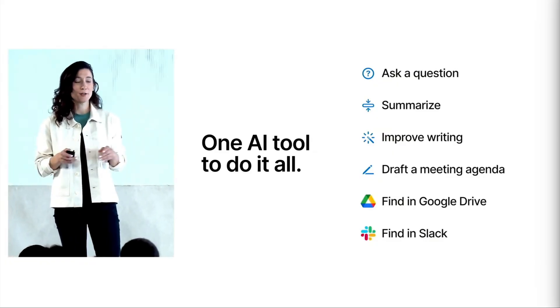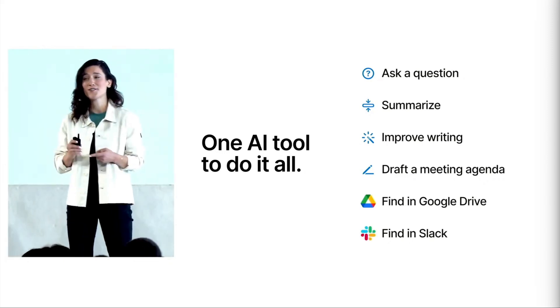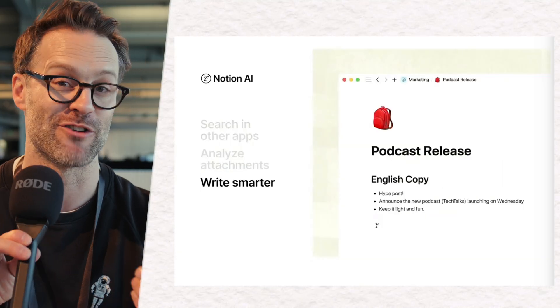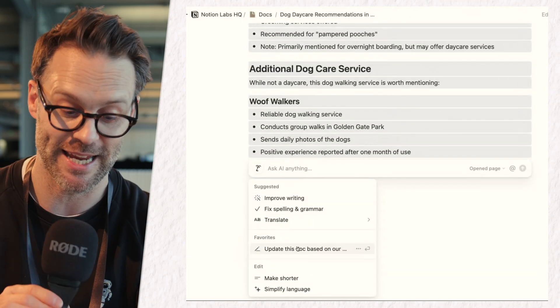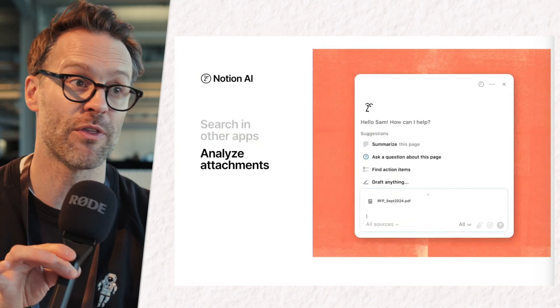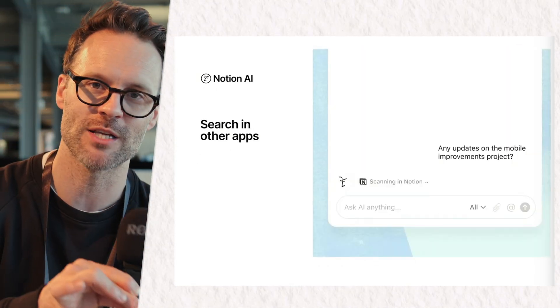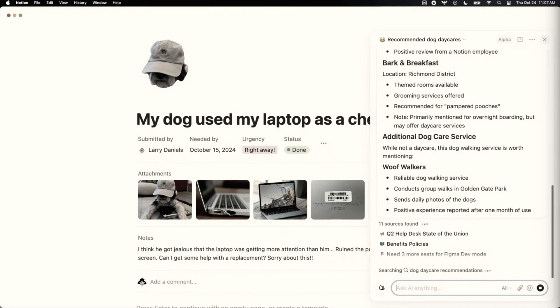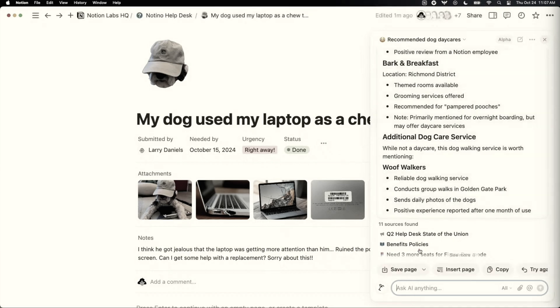We also had a really cool demonstration of Notion AI and where that's been going. What's really exciting is the way you can now essentially chat, search, analyse, and write right across the system. I'm particularly excited about the way you can now reference and get it to search through attached PDFs, or if you have Slack connected to your Notion workspace, it will also search through Slack. Notion AI is becoming increasingly a system you can use across your whole computer — helping you write, look through information within pages, and then suggesting outcomes or directions.